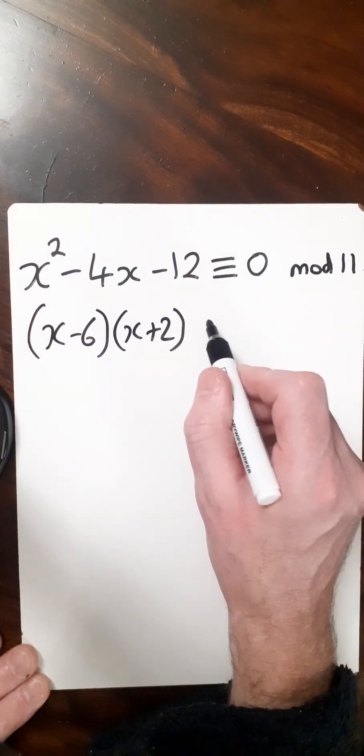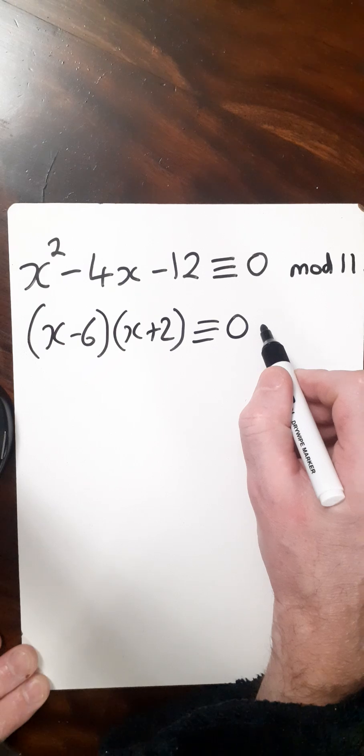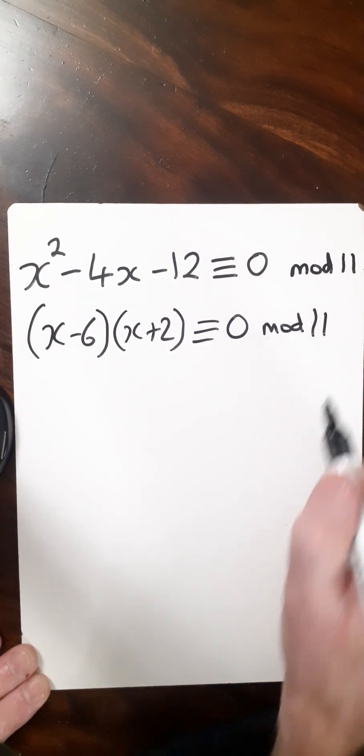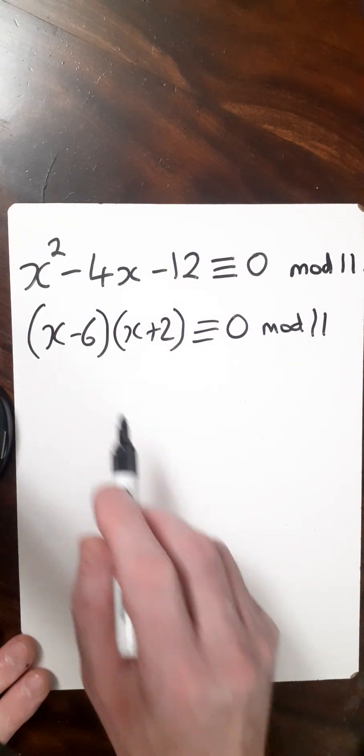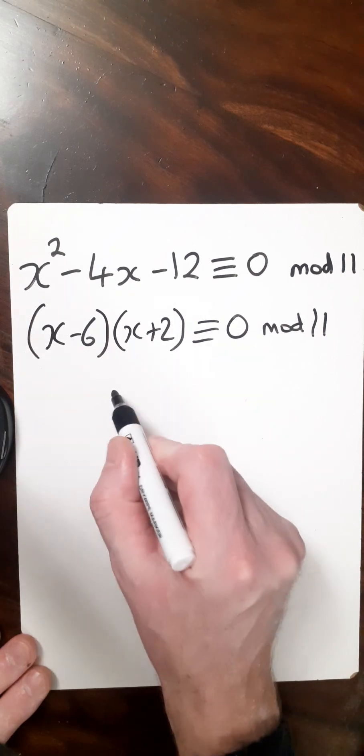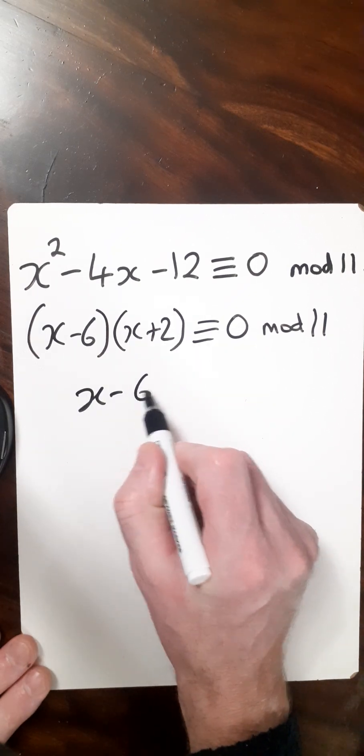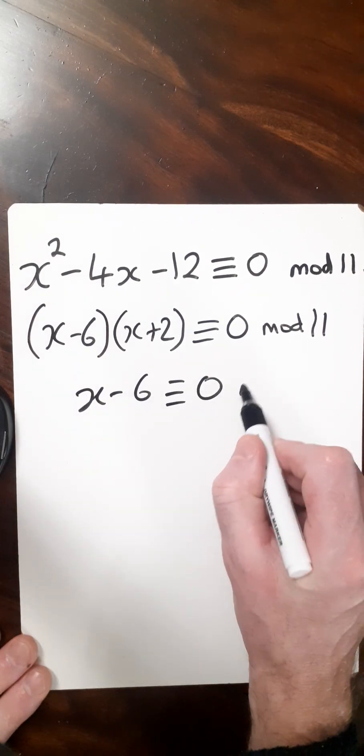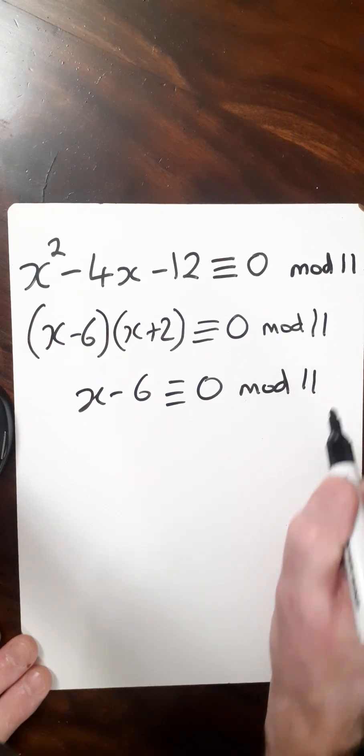Now we'll take care of the congruence with 0 modulo 11. We'll take each factor individually, so x - 6 ≡ 0 (mod 11),